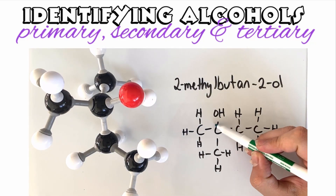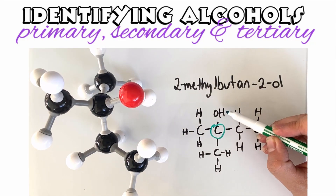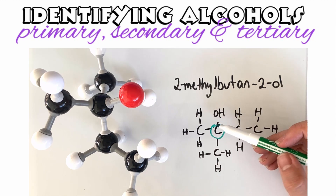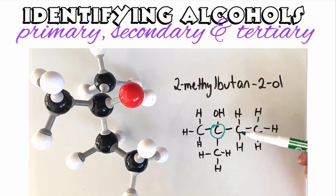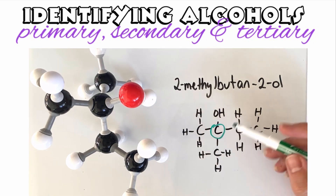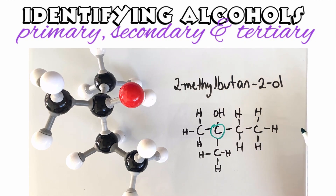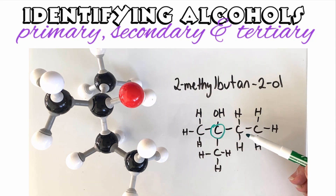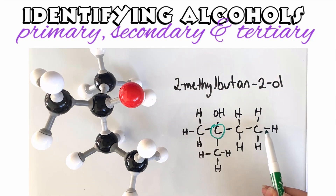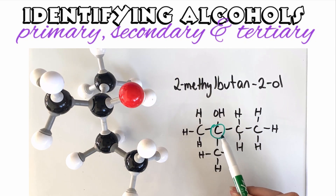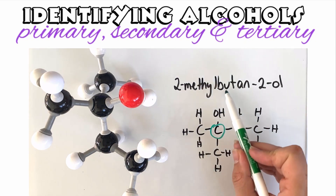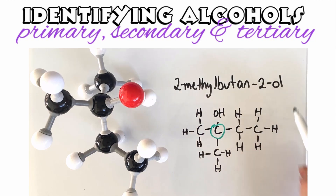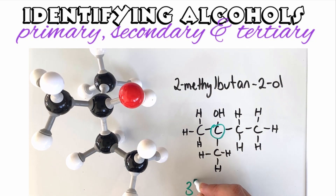In the diagram, the carbon attached to the OH functional group is connected to three other carbons — a methyl group, another methyl group, and an ethyl group. Just don't get confused when naming: even though it's attached to three alkyl groups, the name comes from the longest chain, which is why this is called 2-methyl-butan-2-ol — a third-degree or tertiary alcohol.